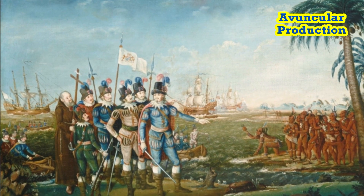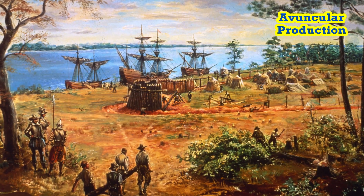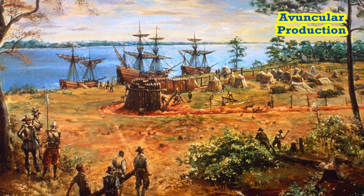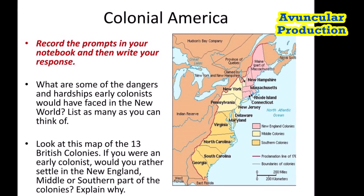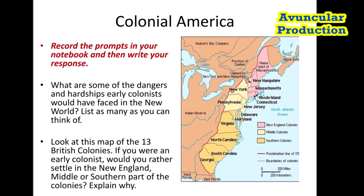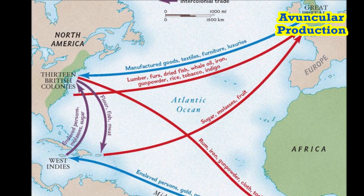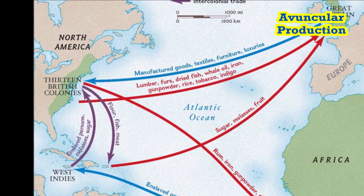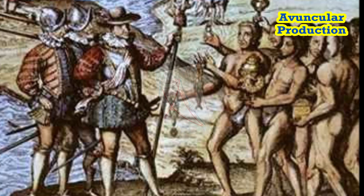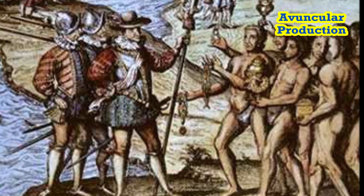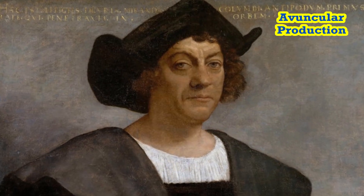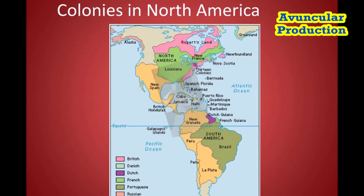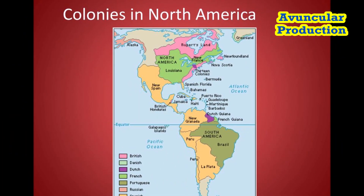12. Zachary Taylor, 1849–1850, Whig. A war hero whose presidency was cut short by his death. 13. Millard Fillmore, 1850–1853, Whig. Signed the Compromise of 1850, which aimed to ease tensions over slavery. 14. Franklin Pierce, 1853–1857, Democratic. His support for the Kansas-Nebraska Act inflamed sectional tensions.